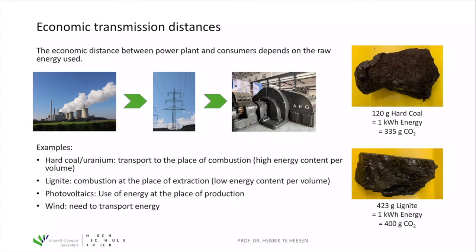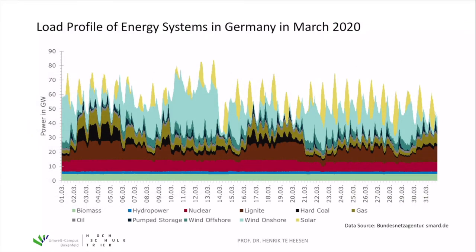The load profile of energy systems in Germany is shown using data from the Bundesnetzagentur, the Federal Network Agency. Different colors represent different energy production systems: biomass in green, hydropower in blue, and nuclear power in red. The shape of the curve follows the energy demand in Germany, with clearly visible high peaks at noon and low values at night. The data covers March 2020, with power varying between about 40 gigawatts and a maximum close to 80 gigawatts.